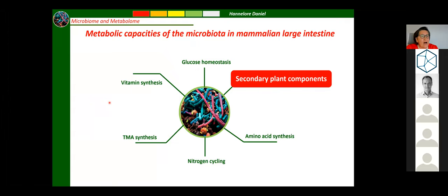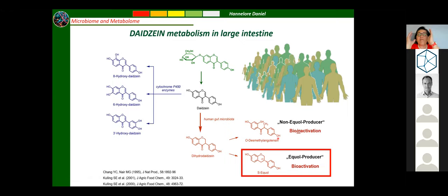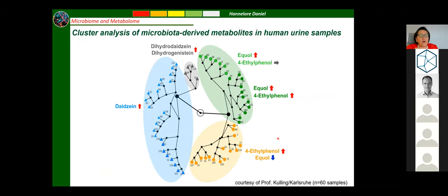This brings me to an important aspect: phytoestrogens. They are consumed particularly by postmenopausal women, as they are claimed to activate estrogen receptor alpha or beta and protect the cardiovascular system. What is important is the enormous difference in the metabolic capacity of the microbiome: reducing daidzein and genistein — the soy phytoestrogens — to either equol, considered to be the active protective compound, or degradation products that cause bioinactivation. In humans, about 30% are equol producers and the rest do not produce equol.